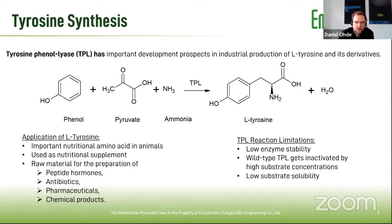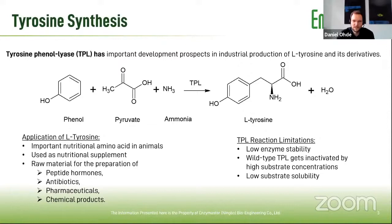With this reaction, a tyrosine phenolase can produce tyrosine in a very interesting way, because here one has very cheap substrates — ammonia, pyruvate, phenol — and can produce basically chiral tyrosine. However, this reaction suffers from some limitations.